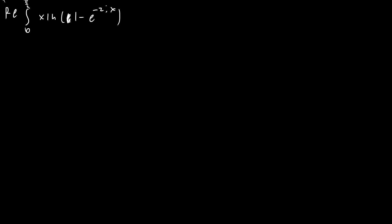Let's take a look at this part of the integral. We're going to expand this using the power series ln(1 − x) = −∑(n=1 to ∞) xⁿ/n. So we're going to bring the sum outside with a negative sign and proceed from there, canceling any imaginary parts afterwards.